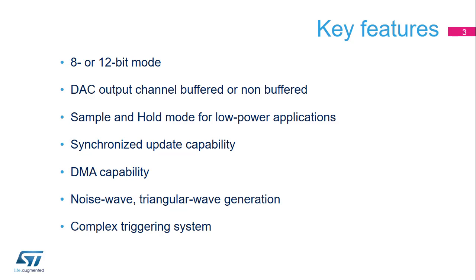The digital to analog converter inside STM32L5 microcontrollers offers simple digital to analog conversions in 8 or 12-bit mode. The DAC outputs can have a low impedance buffer to drive external loads. Its sample and hold mode can reduce power consumption significantly. The two converters within the same DAC can be synchronized with each other. The input data can be transferred by DMA, which offloads the CPU.